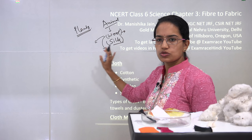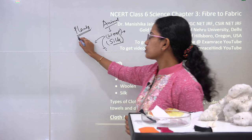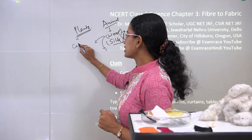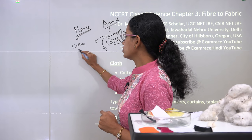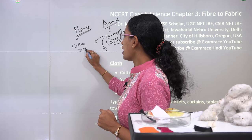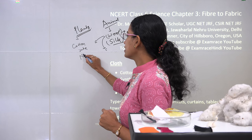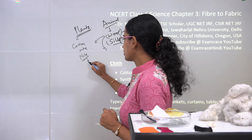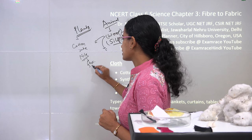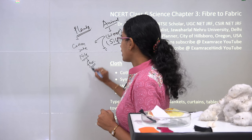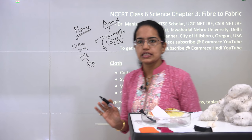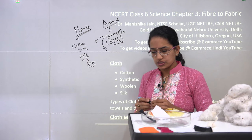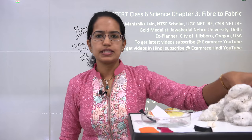Besides shahtoosh, you have angora wool from the rabbit, wool from yak, from camels, and so on. Those are the various sources of wool. Coming on to plant sources, there are predominantly two: cotton and jute. In the parts of Egypt in the Nile Valley, another common source is flax, so you have flax, jute, and cotton from plant sources.